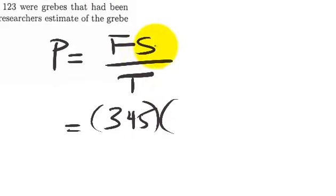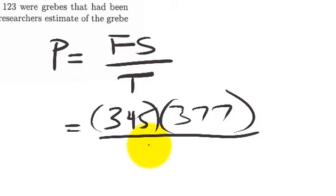Fs stands for the sample size of your second sample, which is 377. And T stands for the number of tags in your second sample, which is 123.